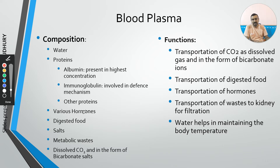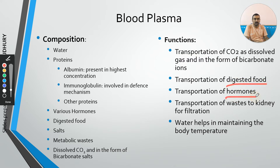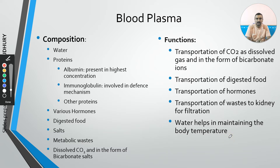Carbon dioxide in dissolved form or as bicarbonate salts is also present in blood plasma. All these substances are present in plasma because they are transported by it: carbon dioxide, digested food, hormones, and metabolic wastes. Additionally, the water present in plasma is responsible for maintaining body temperature, so blood also plays a role in thermoregulation.